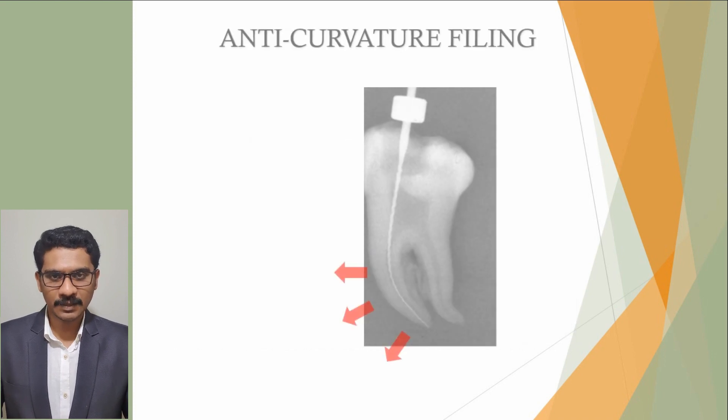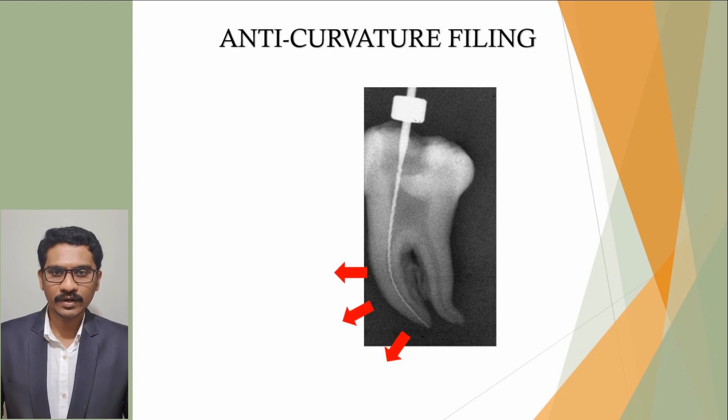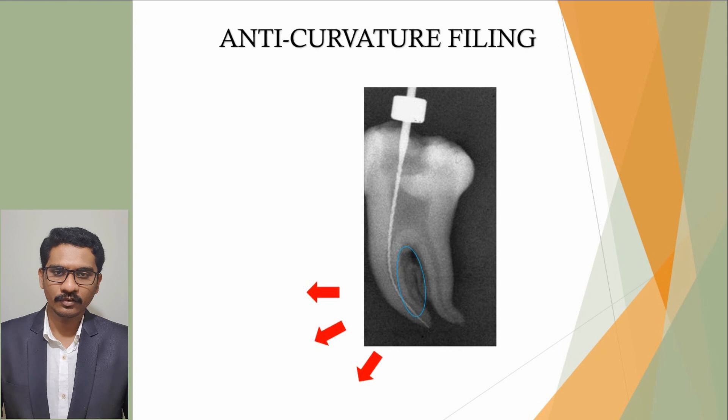One important concept in preparing curved canals is the anti-curvature filing. It helps to avoid strip perforations and canal transportation. The concept is to prepare a straight line axis through the root canal to the apical region by filing away the bulky root structure to create a displacement space and not touching the thin root walls which are in danger of being perforated.